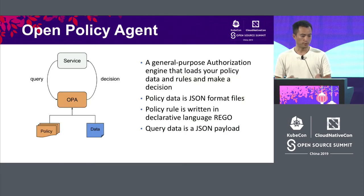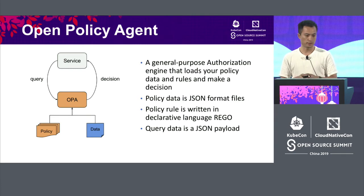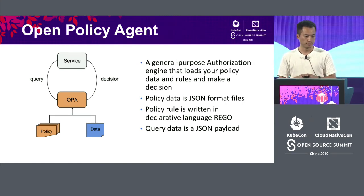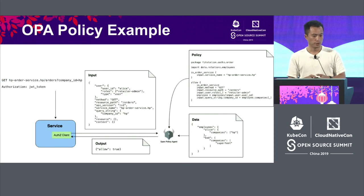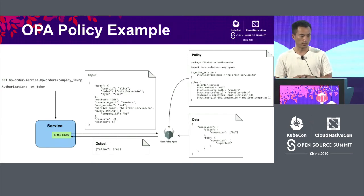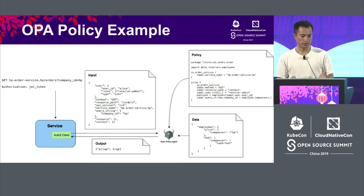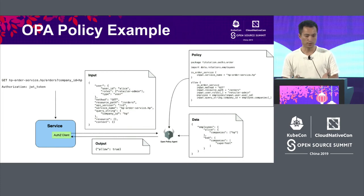A little background on Open Policy Agent: it's a general-purpose authorization engine from CNCF — I think it just graduated. Basically, your service sends a query to Open Policy Agent, and it makes an authorization decision based on the policy and data you configured. In our order service, we have OPA Client integrated. When user Alice tries to request orders from company HP, OPA Client extracts attributes from the current request and packs them into a JSON payload. These attributes include user attributes, API attributes, and request attributes.